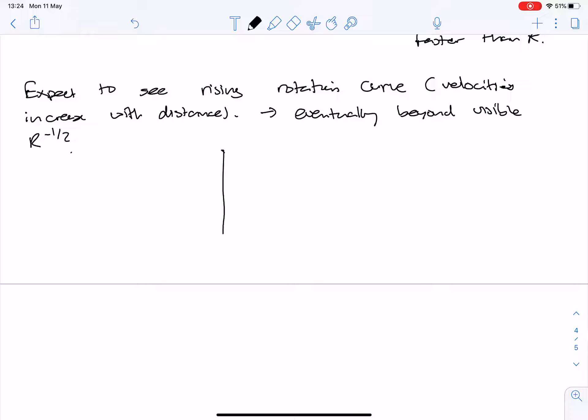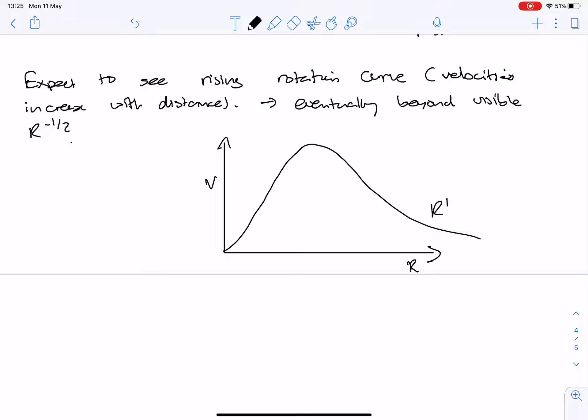So what I would expect to see, if I plot here v and here r, I would expect to see something that looks like this, ultimately going as r to the half.